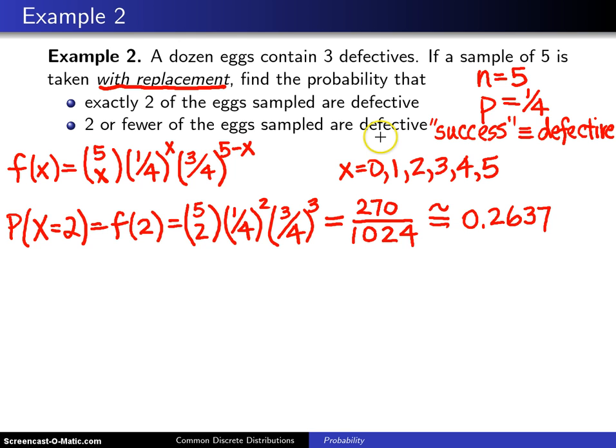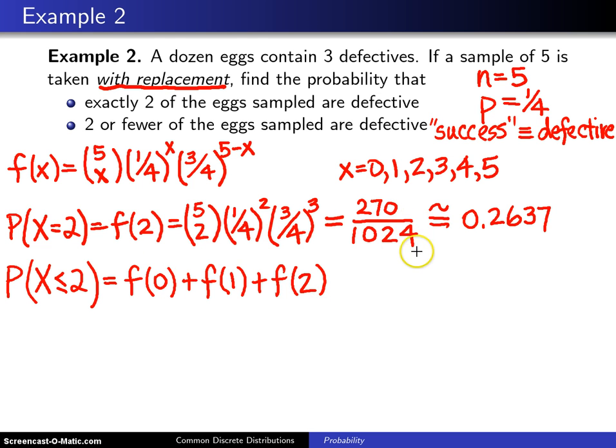Second thing to calculate is to find the probability that two or fewer of the eggs sampled are defective. And that is the probability that the random variable capital X is less than or equal to two. In this case, we're going to have to add up f of zero plus f of one plus f of two. Now, f of two, we just calculated up above. That's the 270 divided by 1024. But you've got to go through this same procedure for f of one and for f of zero. You can see that's going to be a little bit tedious. I will spare you of the details. This turns out to be 918 as a numerator divided by 1024. And when you work out the decimal equivalent of that, you get 0.8965.